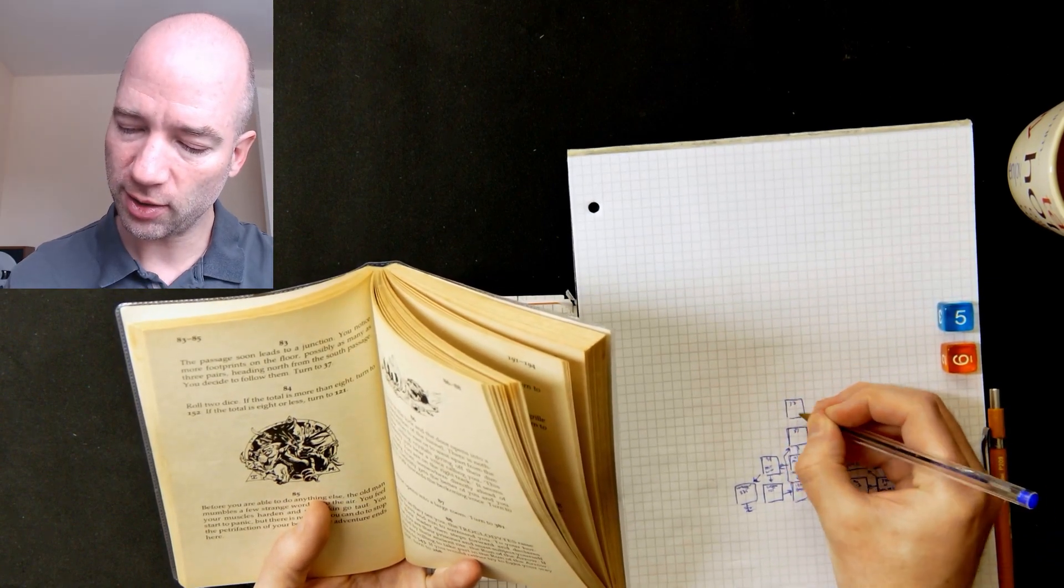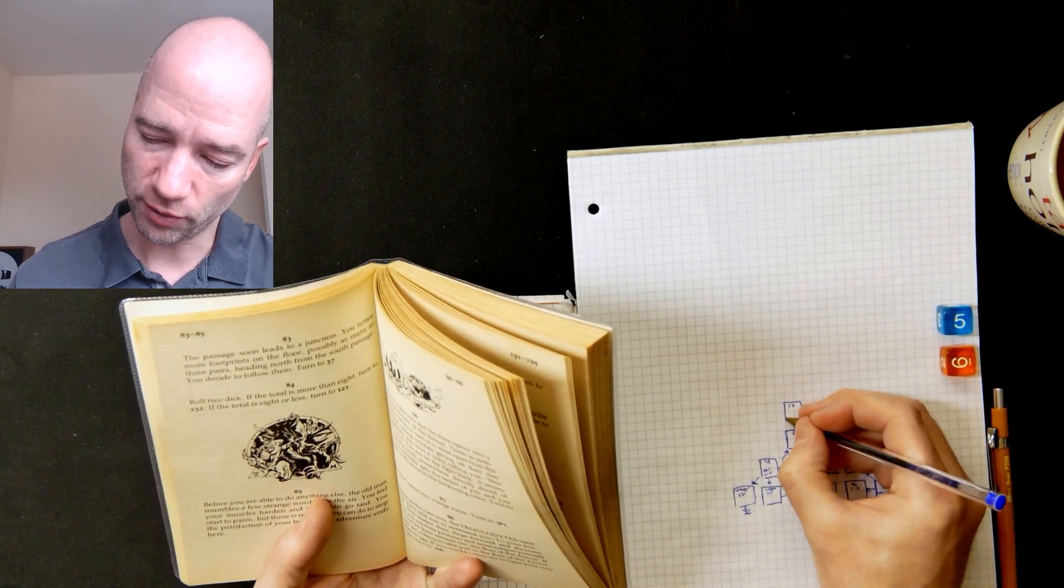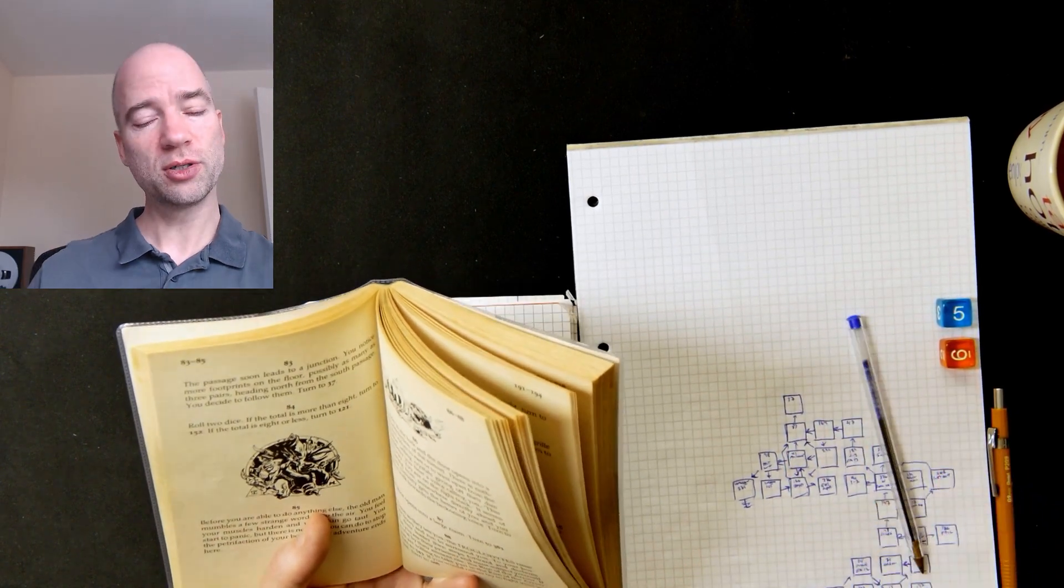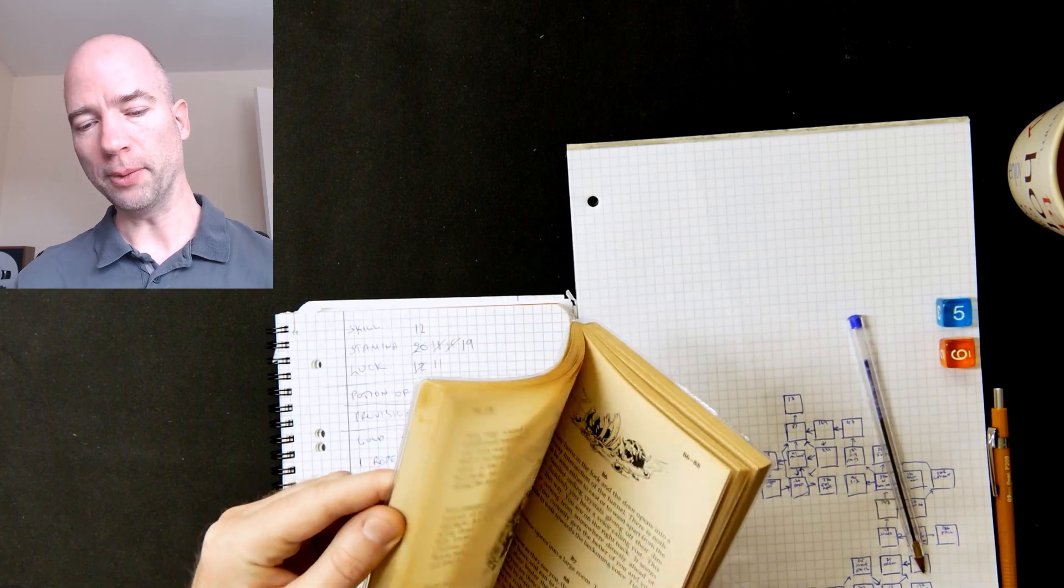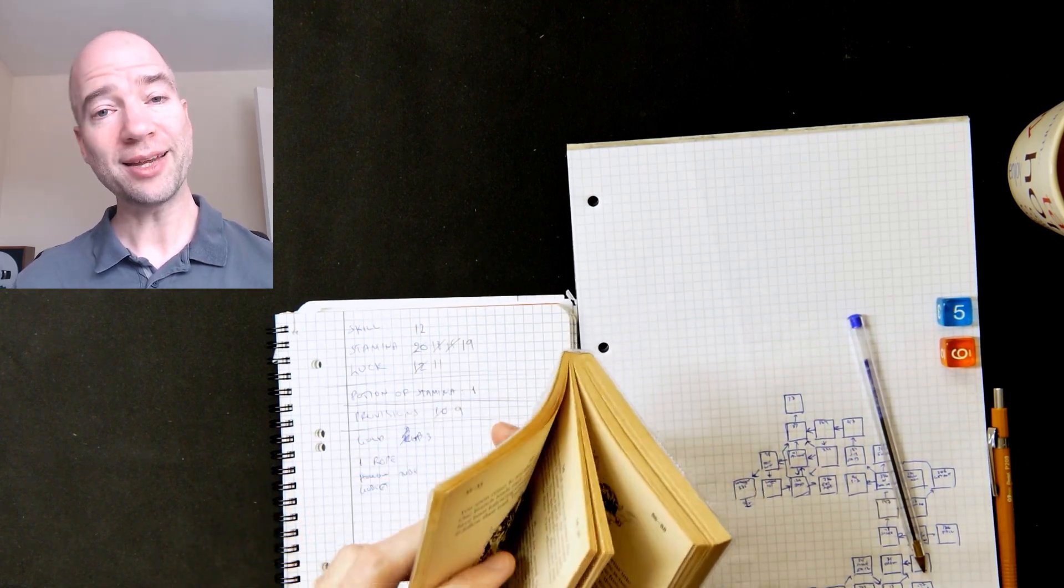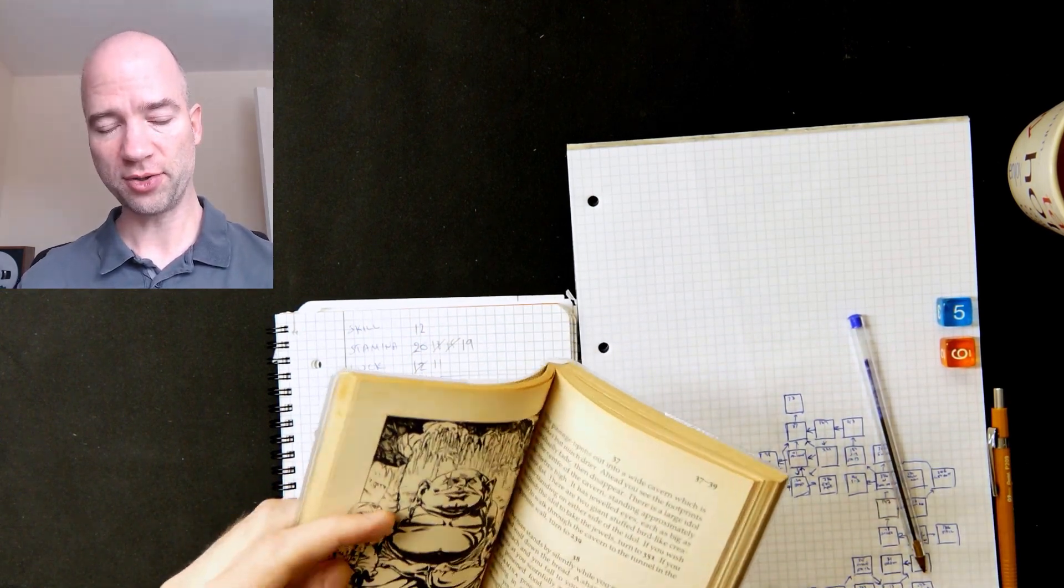The passage soon leads to a junction. You notice more footprints on the floor, possibly as many as three pairs, heading north from the south passage. So this is where we get back to whatever else, the other direction you could have gone in the beginning. So it looks like in the beginning there are two different paths one can follow and this is the first talk point afterwards. Okay. Next time I guess I'll have to go the left path to see where that goes.